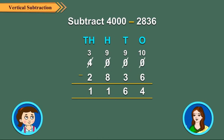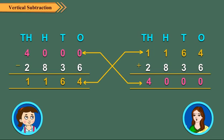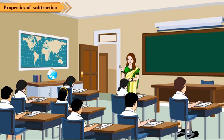Children, you know we can check whether subtraction is correct or not. For this, if we add the answer to the smaller number, the greater number should be obtained. If we do not get the greater number, then the answer is incorrect. Let us now check if the above subtraction is correct or not.